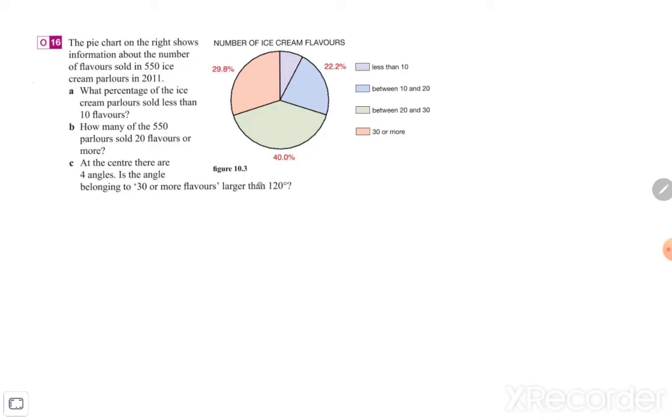Less than 10 flavors is that part what you find in the purple segment. We know that the percentage from the rest of them is what we already know. So from the orange one is 29.8 percent, green one is 40 percent, and the blue part is 22.2 percent. So the rest of it needs to be less than 10.